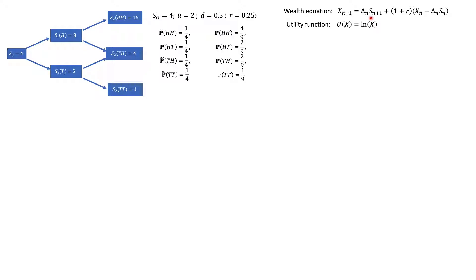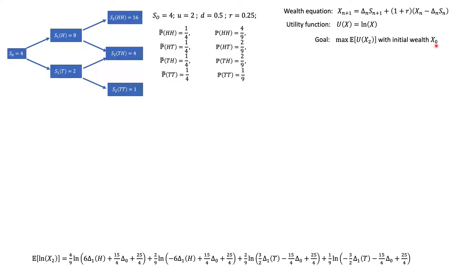The investor has a utility function, and we're using LN. LN is a good utility function for representing a risk-averse investor because it's concave, non-decreasing, and has all those good characteristics. Given this utility function, what the investor wants to do is find the optimal trading strategy — how to trade the stock and the money market — to maximize expected utility from his portfolio, starting with an initial wealth x0. In our case, the initial wealth is 4.